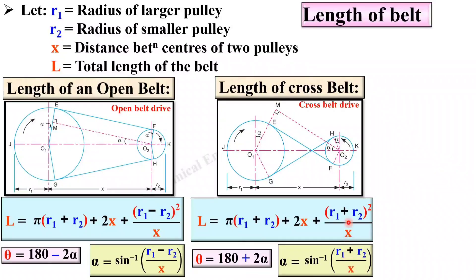You have to remember these equations. Especially in the numerical portion, if alpha is not given to you, then you have to find alpha from this equation, and then you can put the value of alpha into the theta formula so that you can find theta, that is the contact angle.